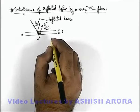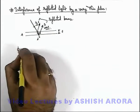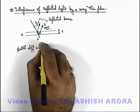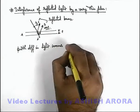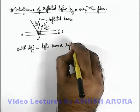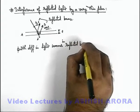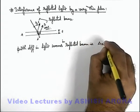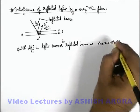If we calculate the path difference between the two beams, we can write: path difference in light waves in reflected beam is 2 mu t minus lambda by 2.